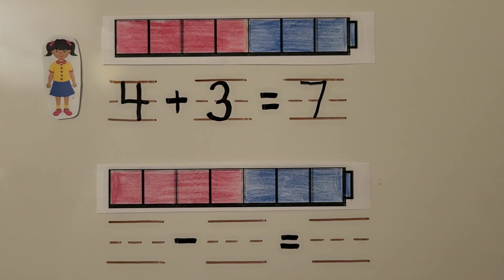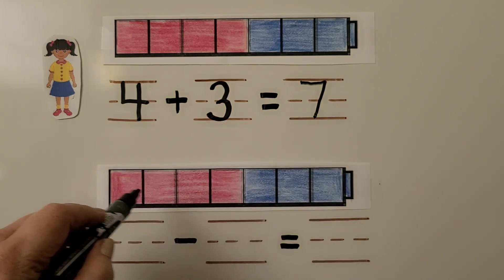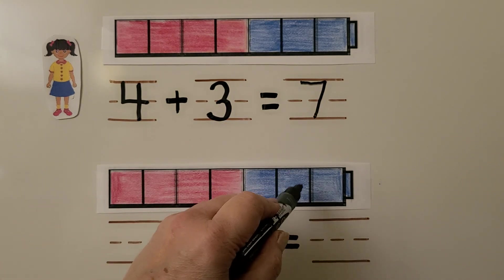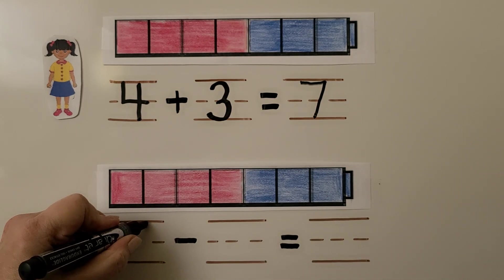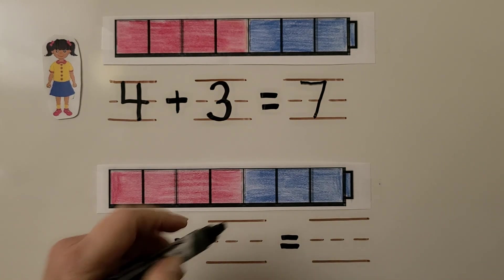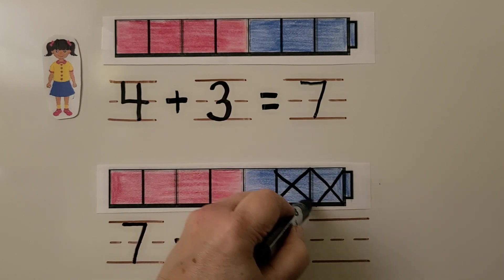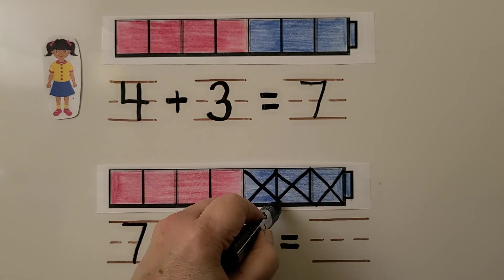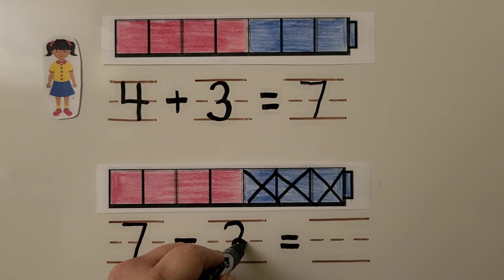Tala gives the three blue cubes to her sister. So how many cubes does Tala have now? She had seven in all — one, two, three, four, five, six, seven. Now we can cross off the cubes that she gave to her sister, the three blue ones. So we are taking away three, and we're going to write that here.